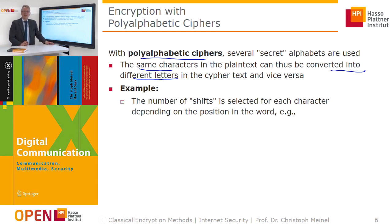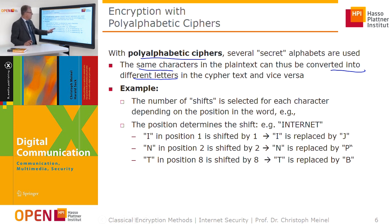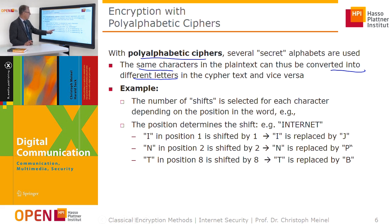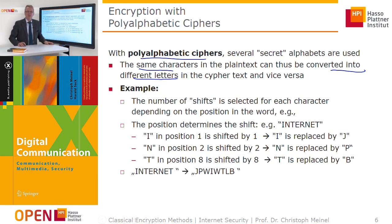In poly-alphabetic ciphers, the number of shifts is selected for each character depending on its position in the word. For example, if we have the message 'internet', the letter I is in position one and is shifted by one, so I becomes J. N is in position two and is shifted by two positions, so N becomes P. T is in position three, so T is shifted by three positions, and so on.